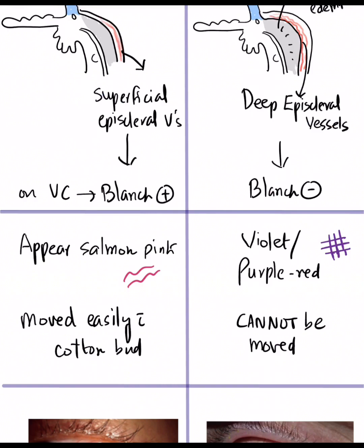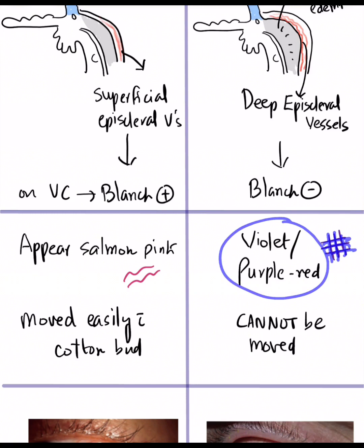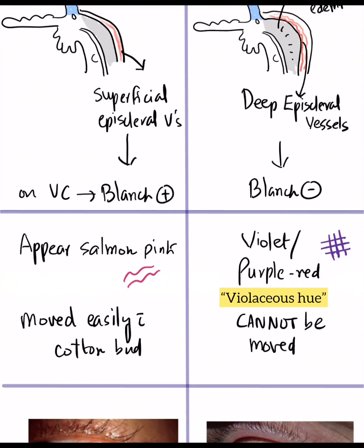The episcleral vessels in episcleritis appear salmon pink and are more linear. On the contrary, in scleritis, the vessels are crisscross and appear violet or purple-red. That's why you will have a violaceous hue in scleritis.